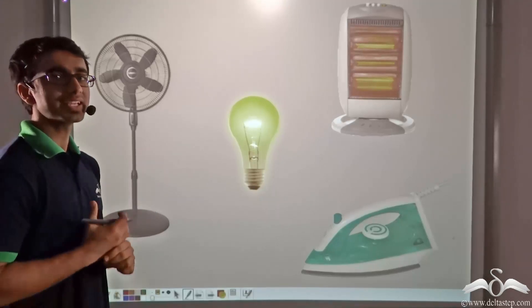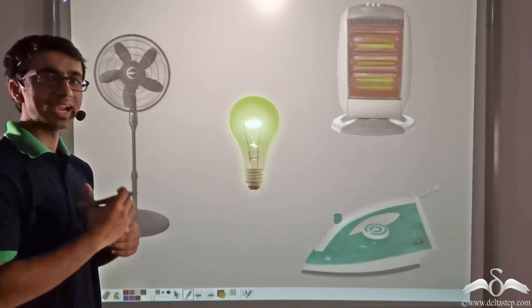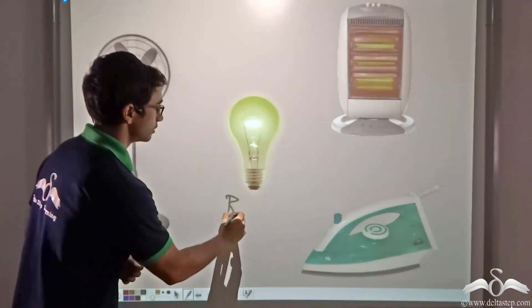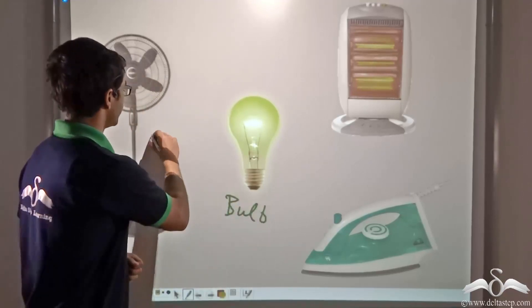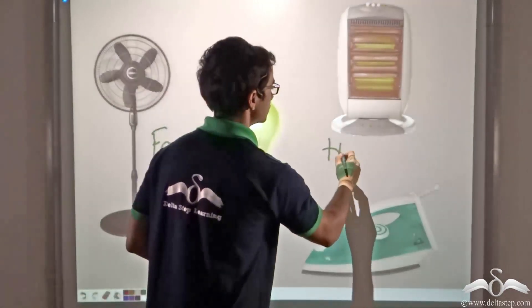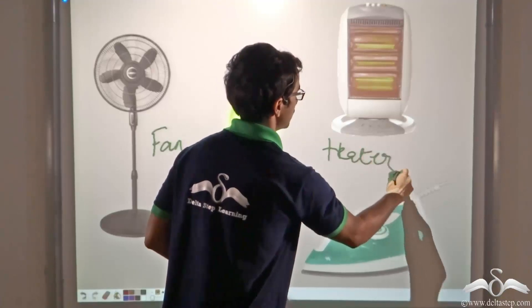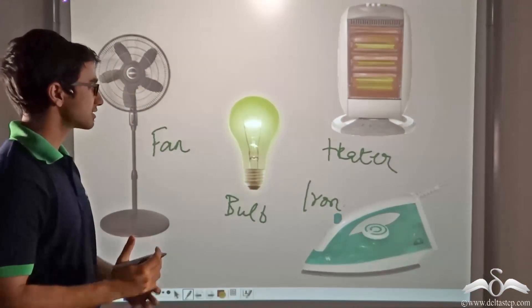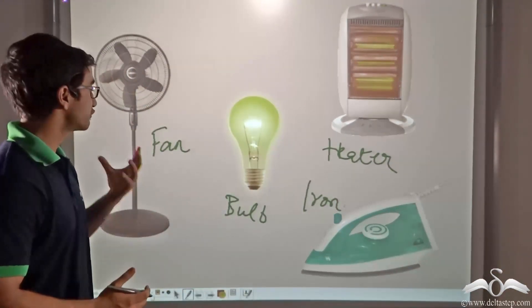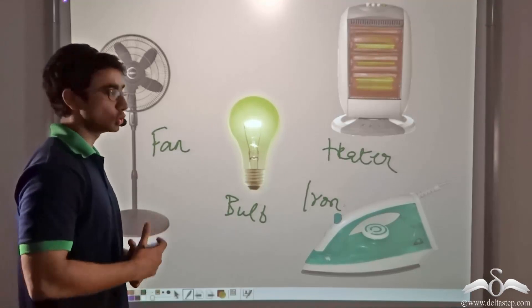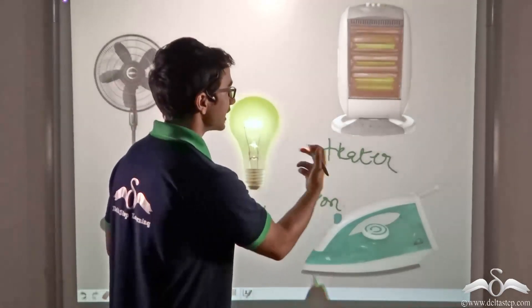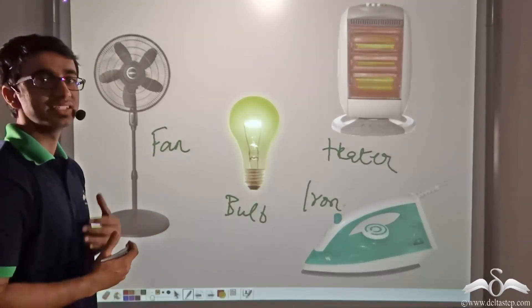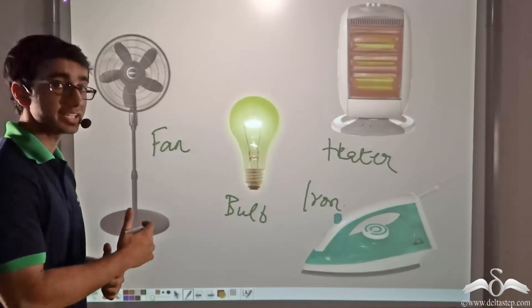You must have seen that in your home there are a variety of appliances that run on electricity, like a bulb, a fan, a heater, or even an iron. The same electricity which makes the bulb glow also makes the fan rotate, and the same electricity enables the heater and iron to get heated up. So how do you think electricity is able to behave in these different manners? Let us quickly find out.